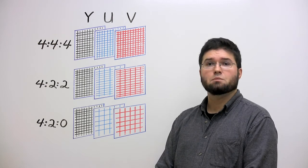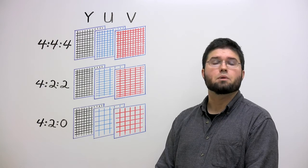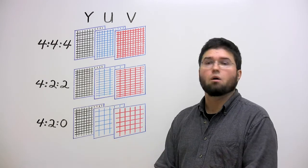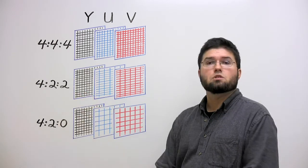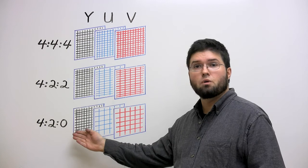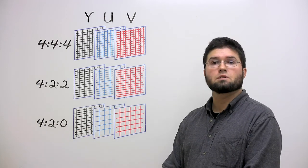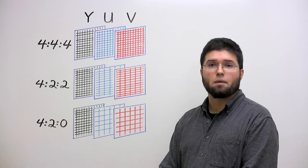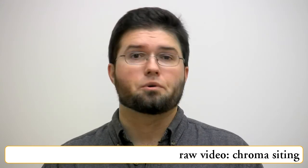Practically every possible subsampling variant has been used at one time or another, but the common choices today are 4:4:4 video, which isn't actually subsampled at all, 4:2:2 video, in which the horizontal resolution of the U and V channels is halved, and most common of all, 4:2:0 video, in which both the horizontal and vertical resolutions of the chroma channels are halved, resulting in U and V planes that are each one-quarter the size of Y. The terms 4:2:2, 4:2:0, 4:1:1, and so on, and so forth, aren't complete descriptions of a chroma subsampling. There's multiple possible ways to position the chroma pixels relative to Luma, and again, several variants are in active use for each subsampling.